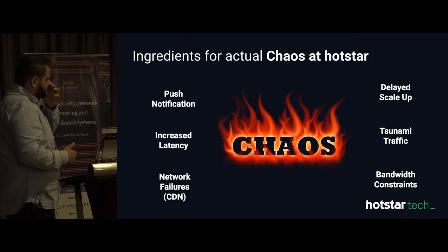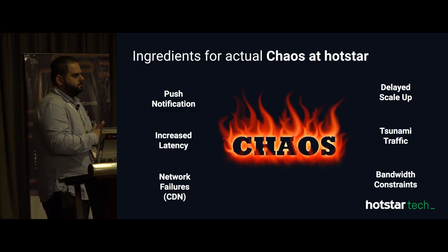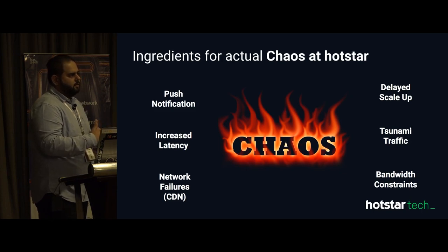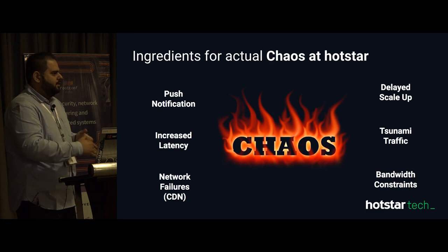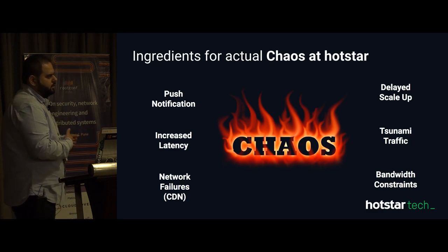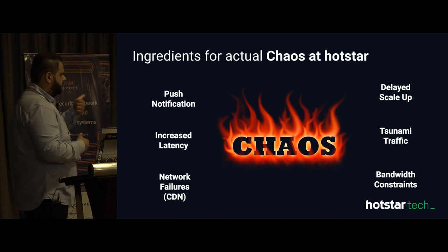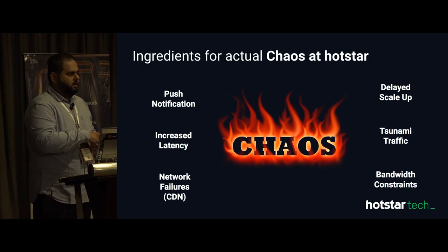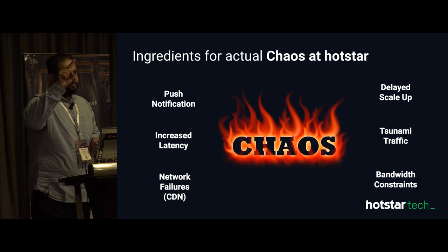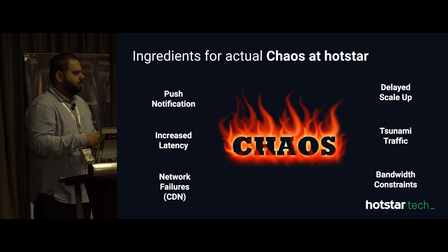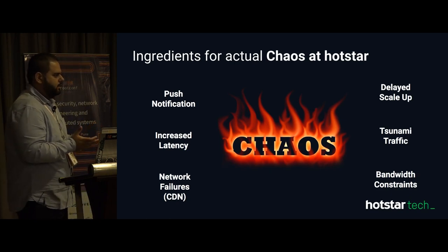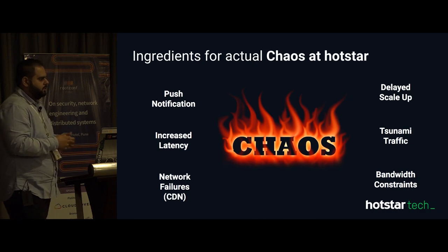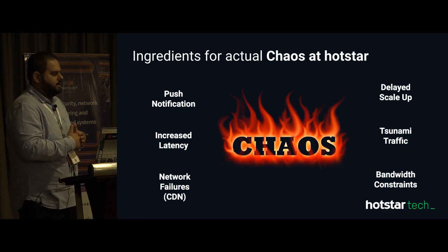Delayed scale-up is another factor — when scale-up needs to happen it needs to happen; you cannot say there is no capacity or due to some issue I will scale up after 5 minutes. The match is not going to wait for you. Tsunami traffic is the sudden spike and sudden drop we saw in the first graph — this is something that can kill the platform or take the entire backend down because you are talking about a choke at any level — DB level, caches, or anything.